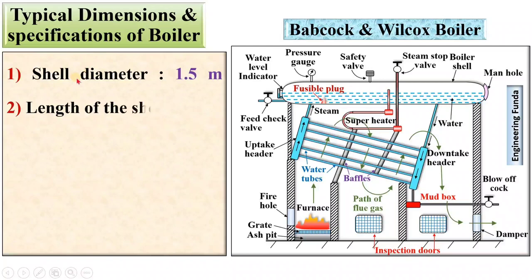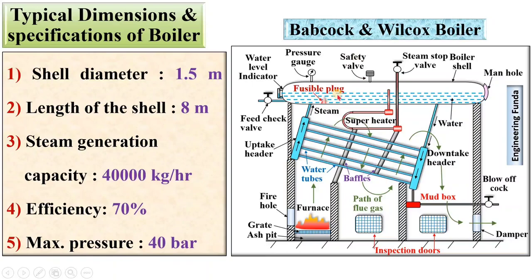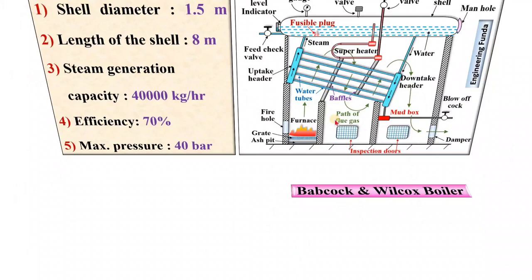Now, typical dimensions and specifications of the boiler. The shell diameter is 1.5 meters and the length of the shell is 8 meters — these are typical dimensions and can vary slightly from boiler to boiler. The steam generation capacity is 40,000 kg per hour. Efficiency is generally 70 percent. The maximum pressure in the Babcock and Wilcox boiler is generally 40 bar.